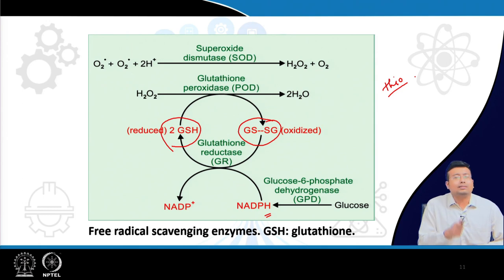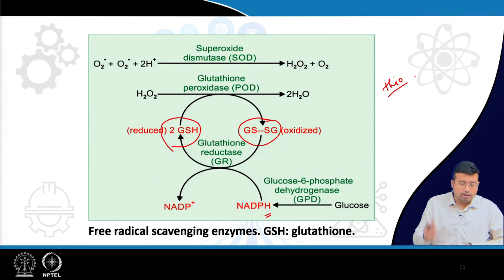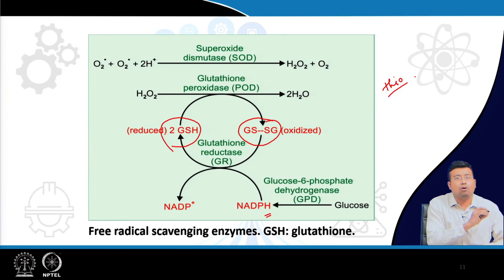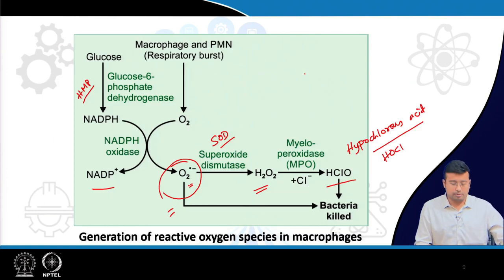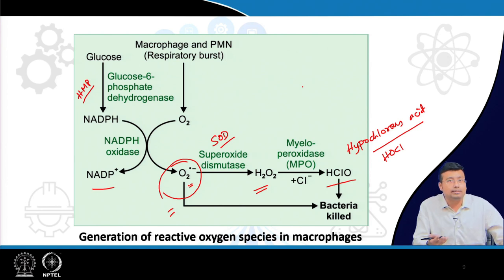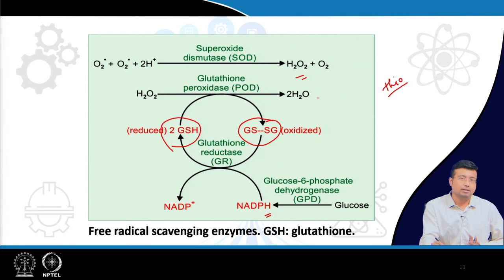Glutathione peroxidase converts peroxides to harmless water. Superoxide dismutase can convert reactive oxygen species such as O₂•⁻ to H₂O₂. H₂O₂ produced during bacterial killing is acted upon by myeloperoxidase, but here glutathione peroxidase acts instead to produce water, which is absolutely harmless to the system.